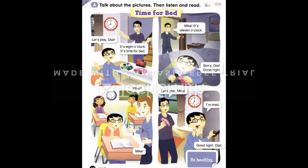Page 62. Lesson 3: Story. Section A — Talk about the pictures, then listen and read. "Time for Bed." Let's play, Dad. It's 8 o'clock — it's time for bed. Mike, it's 11 o'clock. Sorry, Dad. Good night.